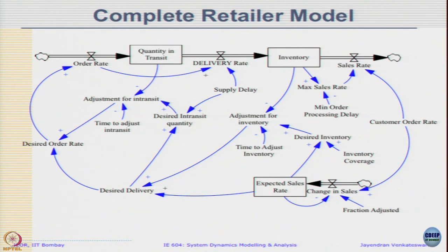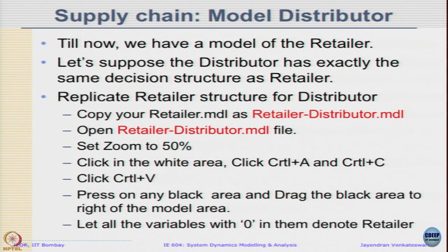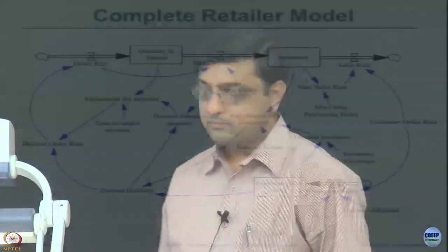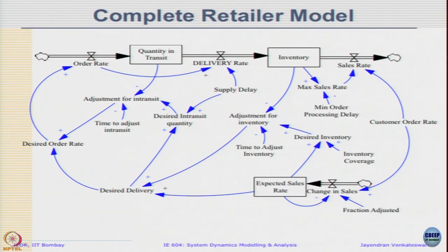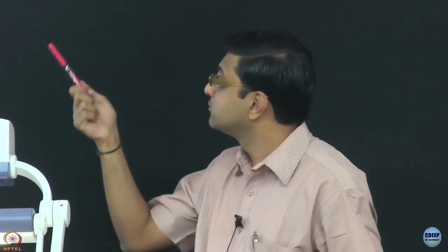So this is the complete retailer model. At the start of the lecture we talked about supply chains, so let us move towards the supply chain. Now we have a model of the retailer. Let us suppose the distributor has the exact same decision structure as the retailer: whatever the retailer is ordering goes to the distributor, the distributor checks his inventory and supplies it to the retailer, and in turn the distributor orders from a factory upstream. In our current retailer model whatever the order rate is, it is assumed to be provided by the distributor with no capacity constraint.